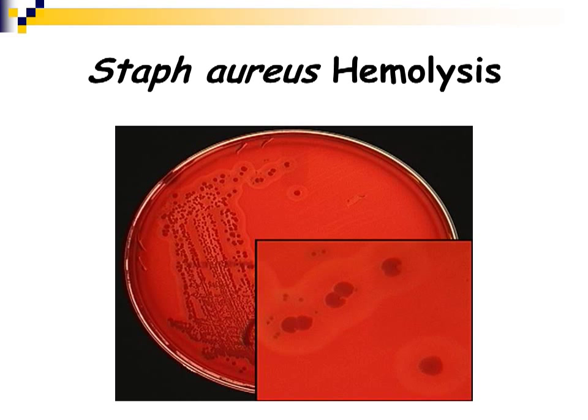Staphylococcus aureus is hemolytic. Most other staphylococcus species that cause human infection are non-hemolytic. Staphylococcus aureus, however, is a beta-hemolytic organism. When grown on 5% sheep blood agar plate — one of the most common general supportive media used in the clinical laboratory, commonly called BAP or SBA — you will see a clearing zone around colonies of staphylococcus aureus.